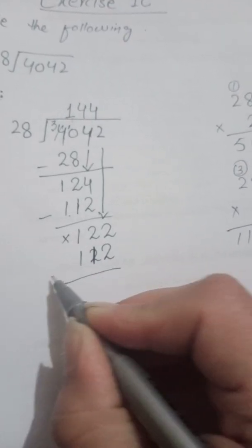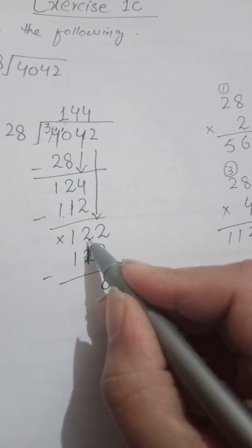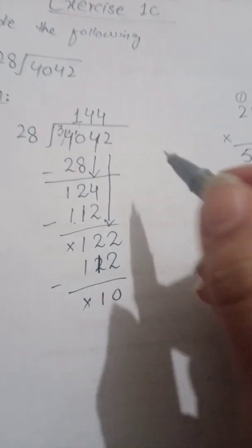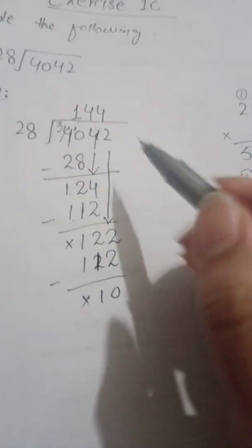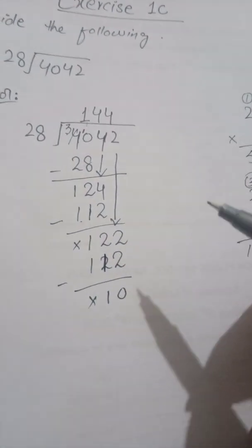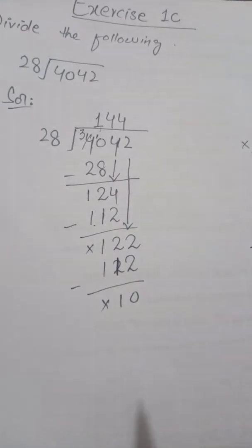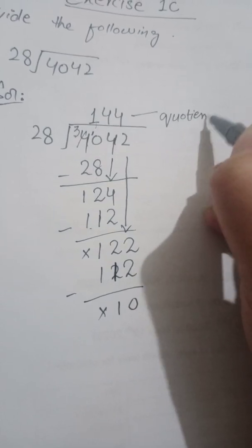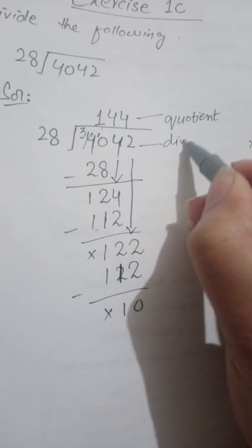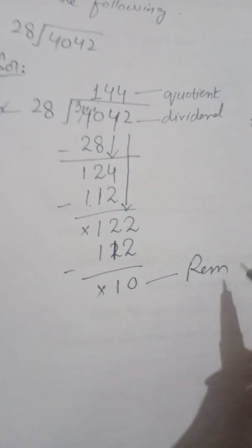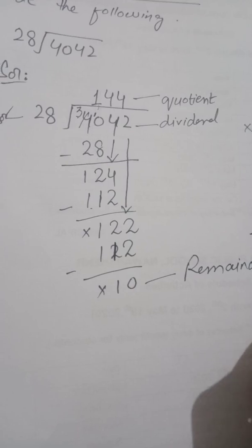We subtract: 2 minus 2 is 0, 2 minus 1 is 1, and 1 minus 1 is 0. After subtracting, the next step is to bring down the next digit. But there is no more digit to bring down. So we stop here. This is our quotient. We call the top answer the quotient, the number we were dividing is the dividend, the outside number is the divisor, and the remaining number is the remainder. These are the special terms you need to remember.